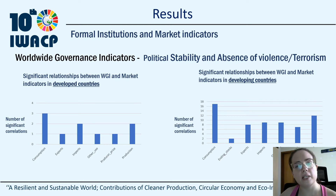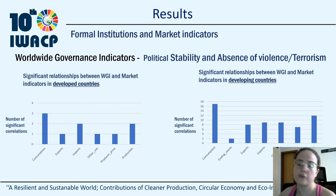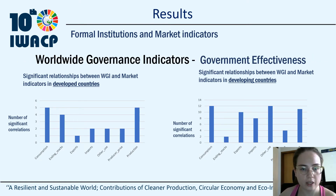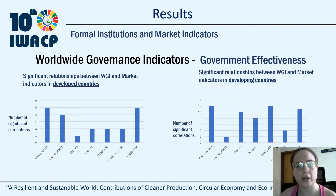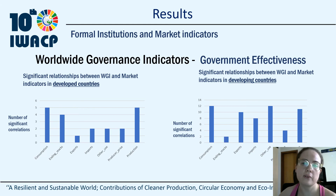Political stability and absence of violence measures political instability and politically motivated violence, including terrorism. Government effectiveness weighs perception about the quality of public services, the degree of its independence from political pressures, the quality of policy formulation and implementation, and the credibility of the government's commitment to its policies.